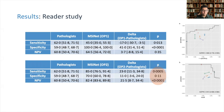On the reader study with OP2 — the sensitivity-weighted operating point — our model achieved significantly higher sensitivity and NPV over the pathologists. The specificity did not differ significantly, and the model even achieved a slightly higher specificity.